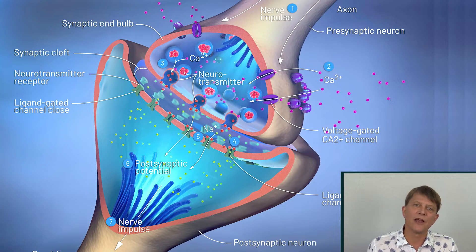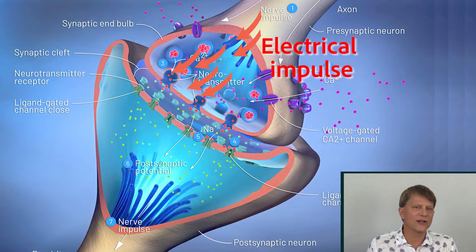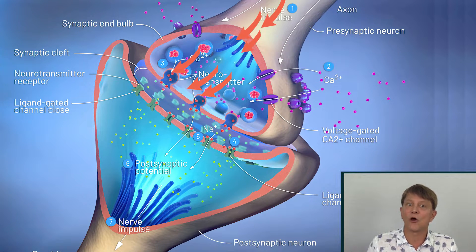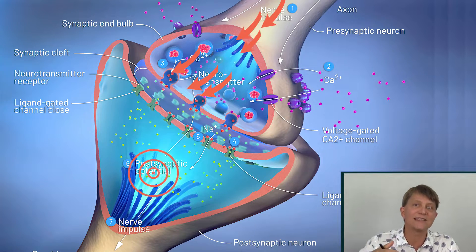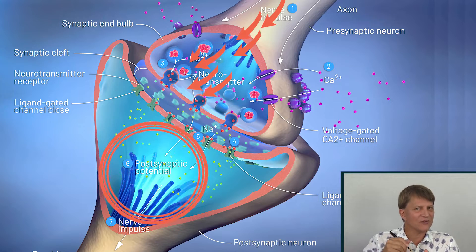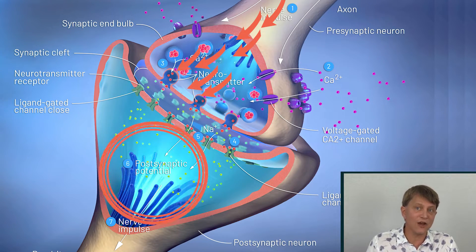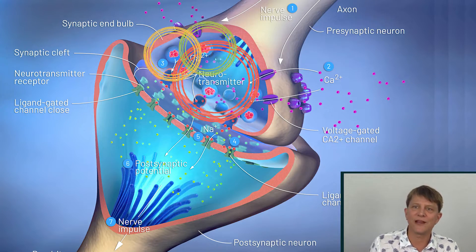Very simplistically, when a nerve gets excited or depolarizes, there's an electrical impulse that travels down the neuron to the far end of the neuron, called the end terminal. At that point we need to transmit that signal to the next neuron. But in most neurons, the electrical impulse is not able to just go into the next neuron.